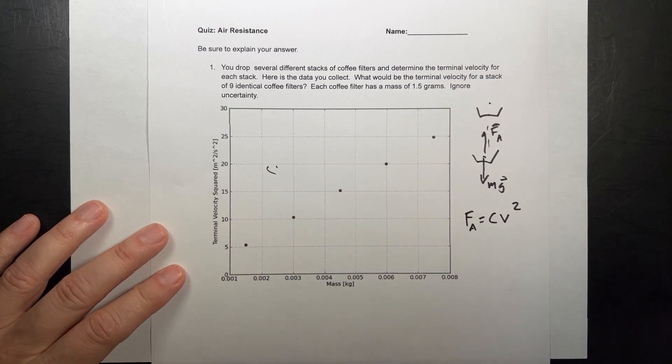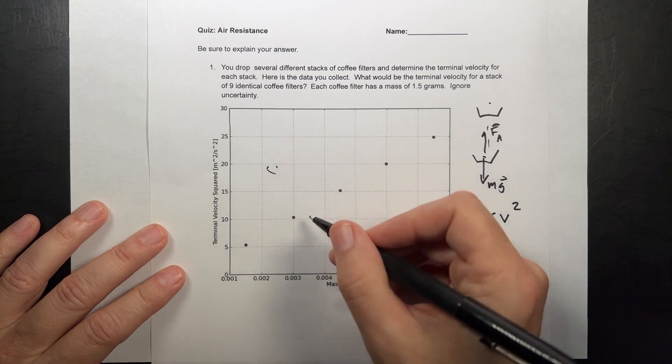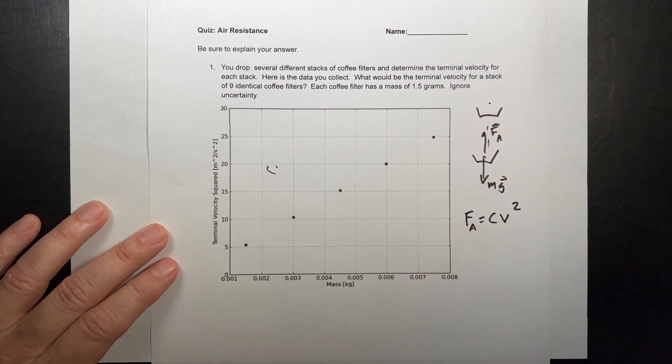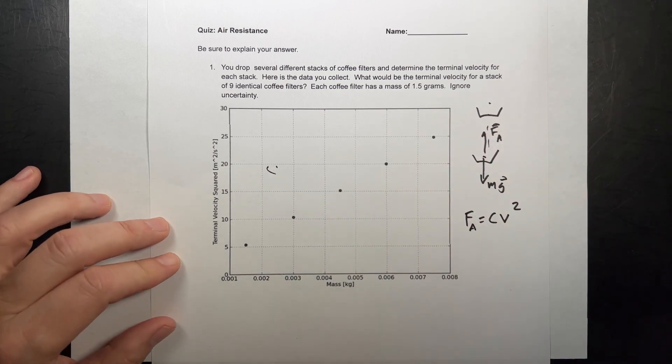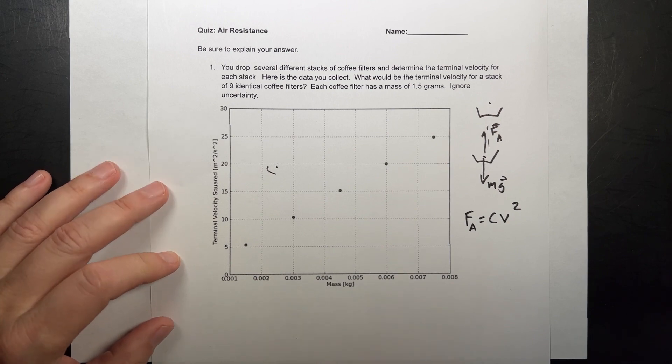Some people try to just dot it out and say, okay, what's it going to be? And I applaud that method. But really, when we have a graph, we want to fit a line to that. So let's just see, at terminal velocity, like I said, these two things would be equal.